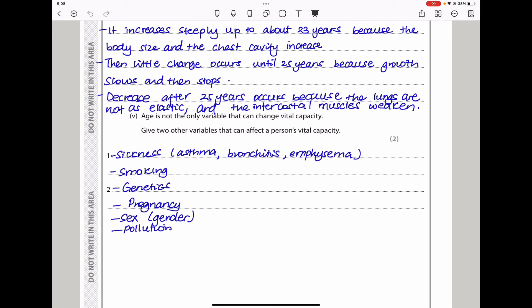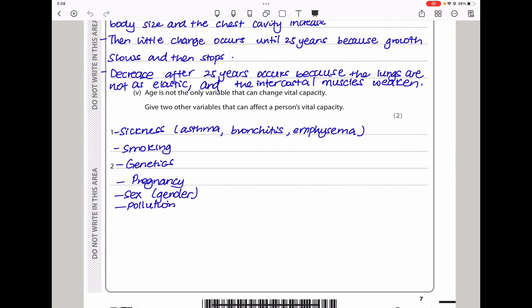Age is not the only variable that can change vital capacity. Give two other variables that can affect a person's vital capacity. If somebody is sick - sicknesses like asthma, bronchitis, emphysema can affect. This could be a genetic condition, or when somebody is pregnant or somebody smokes. The difference between females and males - males are going to have a different vital capacity and females are going to have a different one even when they are the same size and age. Another thing could be due to pollution. Exposure to pollutants can greatly affect your vital capacity because it can affect how your lungs operate.